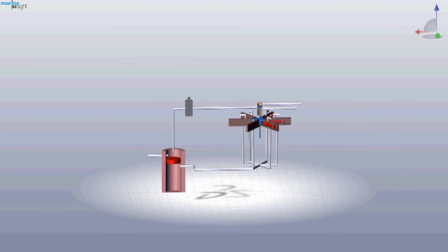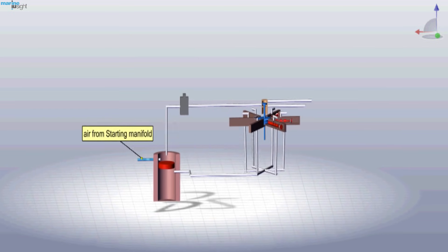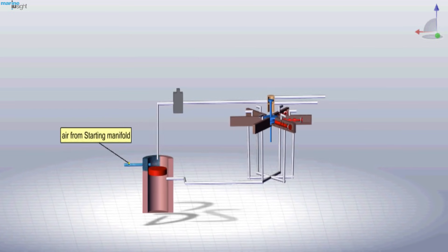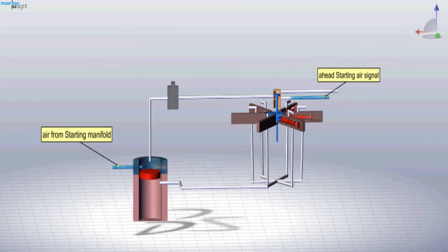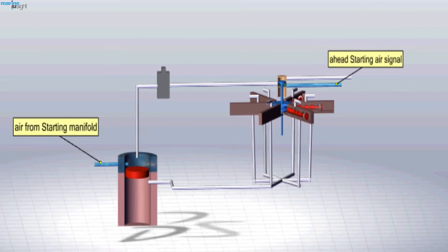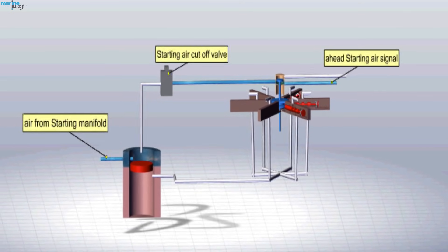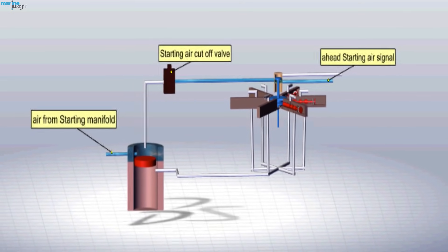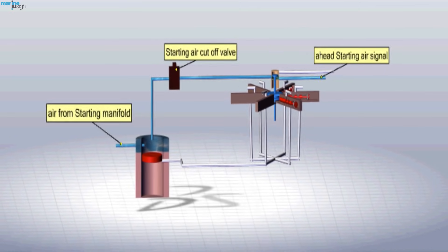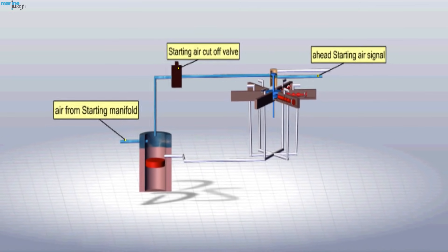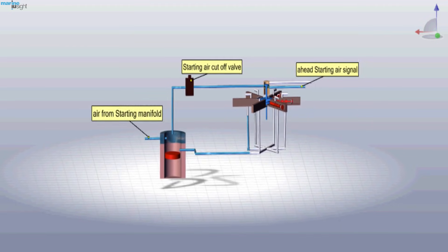If the engine needs to be moved in forward direction, the telegraph is moved to the ahead position. Until now, the starting air is not supplied to the air distributor. Once the ahead signal is given, the air signal goes to the starting air cut-off valve, making it inactive. This allows starting air to go to the air distributor and all the air starting valves via the air control valve.